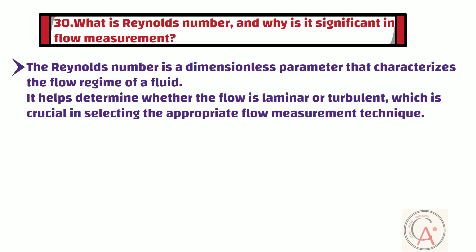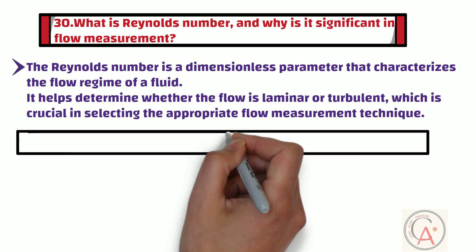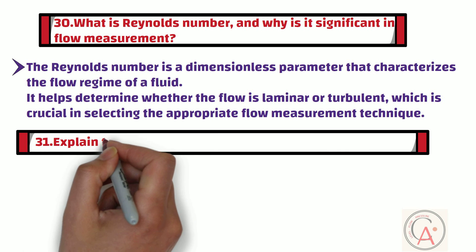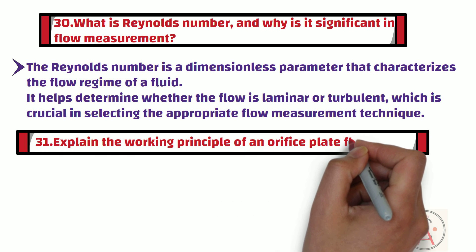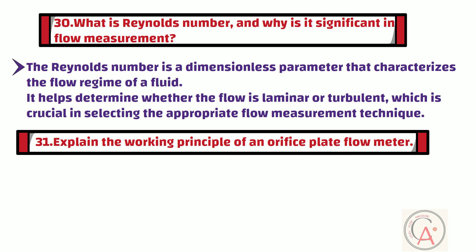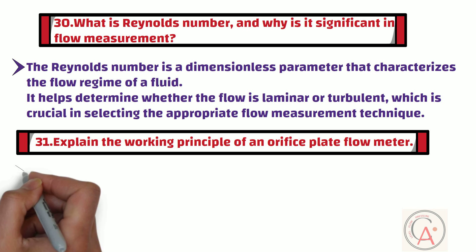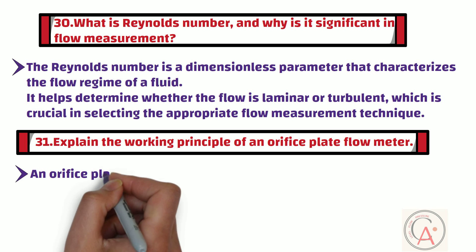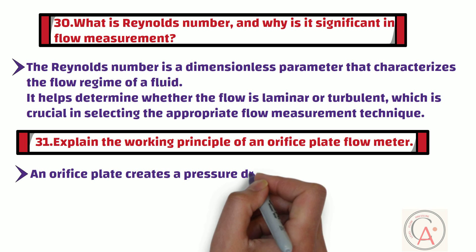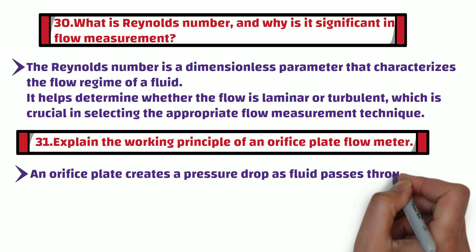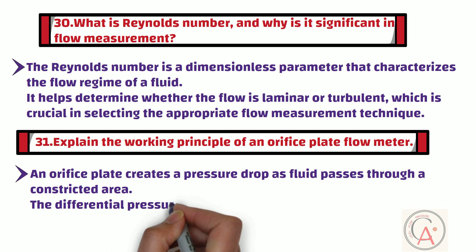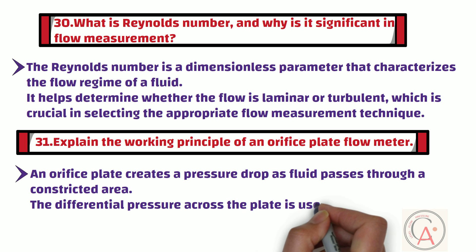The 31st question is: explain the working principle of an orifice plate flow meter. An orifice plate creates a pressure drop as the fluid passes through a constricted area. The differential pressure across the plate is used to calculate the flow rate using the Bernoulli equation.